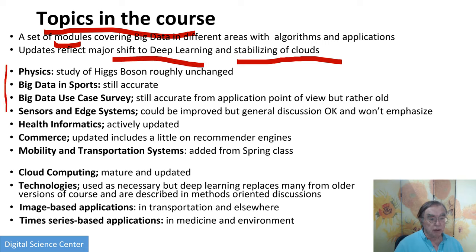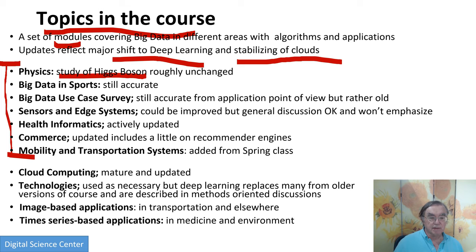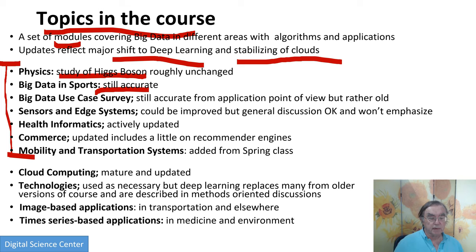Here are the first set of modules, which are all application-oriented. My PhD is in physics, so the first module I ever wrote was on physics and the study of the Higgs boson. Partly due to the technology, it was not done with what I would consider the easiest technology, and partly because the Higgs boson was discovered, those slides are essentially unchanged. There's also a Big Data in sports module — still slightly obsolescent but pretty accurate.